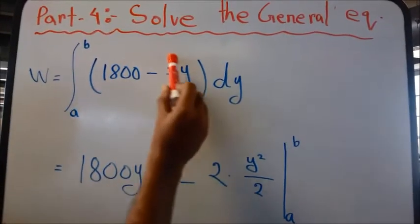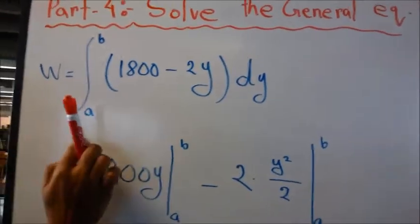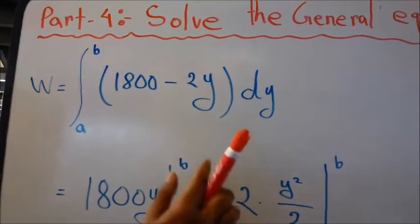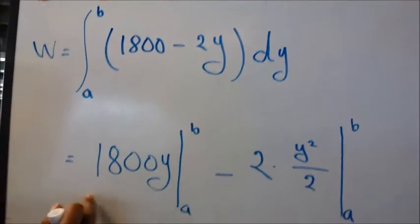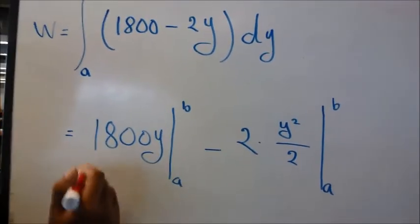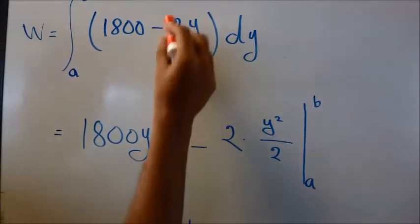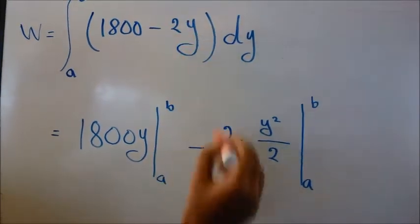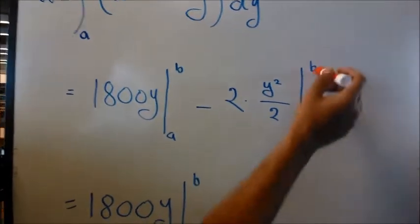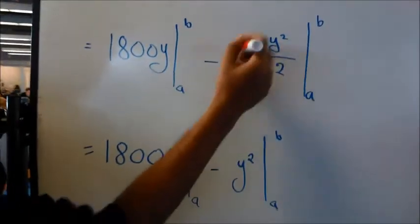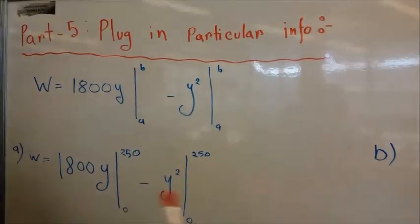In part four, solve the general equation. We take the integration of 1800. Since it's a constant, we get 1800 times Y with the limit. We took the integration of 2Y, constant times Y squared by 2, and then the limit. From there we cancel out the 2 and get Y squared.